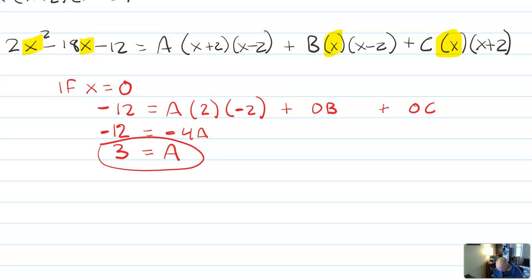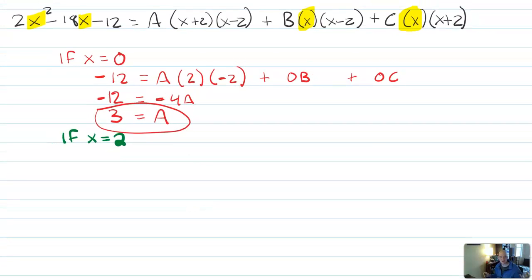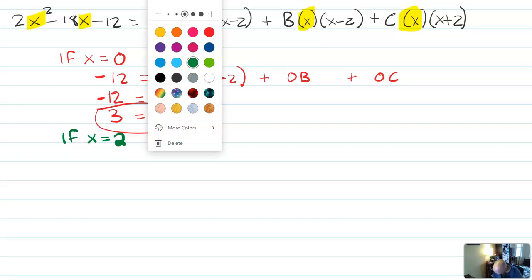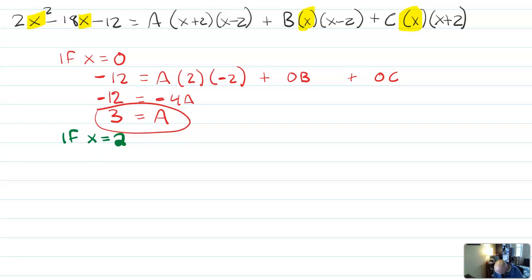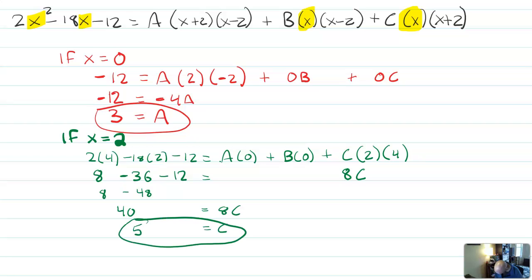Now let's see if we can test some other variables. What if x equals two? That's going to be a little more awkward because I do have to now plug it in. So obviously, if zero you can plug in, it's going to be a lot easier. But if you can't plug in zero, then plug in something that will zero out other values for you. So if x equals two, then I'll have two times four minus 18 times two minus 12 equals a times zero plus b times zero plus c times two times four. So that'll be eight c.